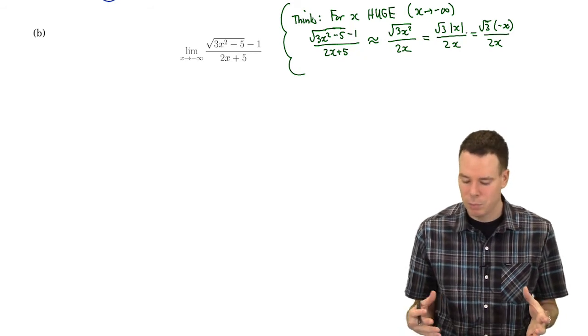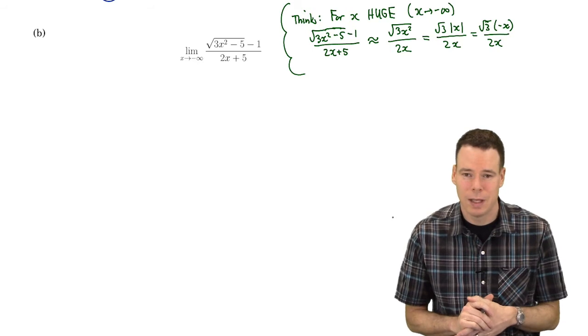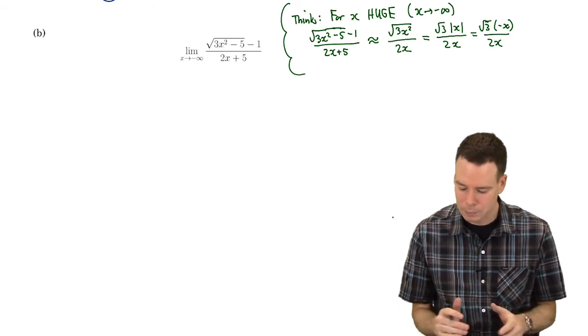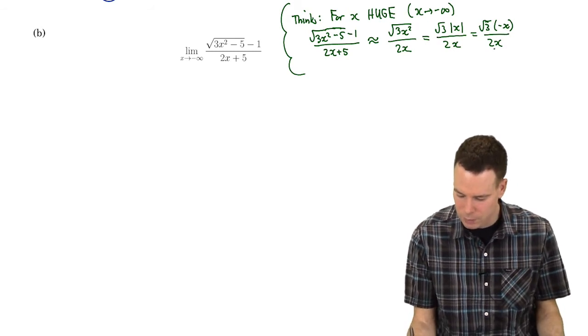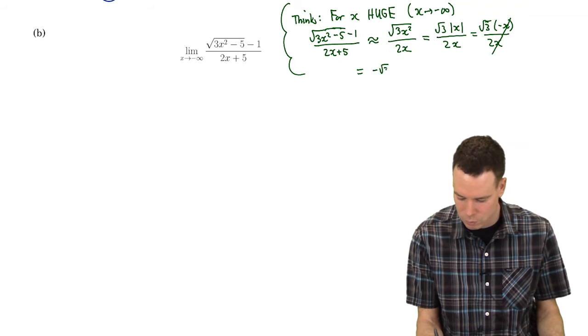Absolute value of x, if x is a negative number then it's the same thing as negative x. In other words what's the absolute value of negative 2? Well that's 2 but that can also be written as negative of negative 2. So I've got negative x and x and cancel those x's off and I get an answer of negative root 3 over 2.